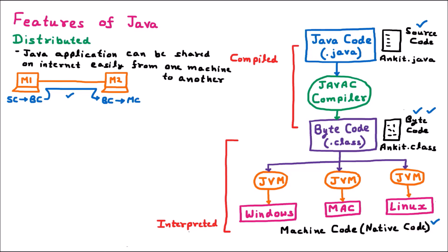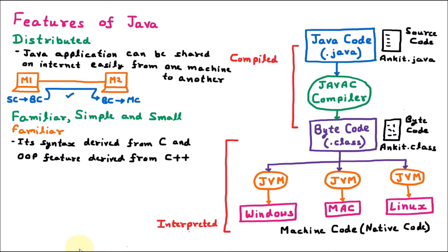The next feature of Java is that it is familiar, simple, and small. Java is familiar because its syntax is derived from C, and OOP concepts are taken from C++. The concepts of abstraction, polymorphism, inheritance, and encapsulation are taken from C++. That's why Java is familiar.